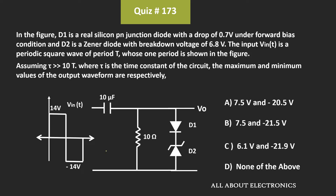In this question, we have been given this circuit, and in this circuit, this square wave is applied as an input. We have been given that the voltage drop across this P-N junction diode is 0.7V and the Zener breakdown voltage of the Zener diode is equal to 6.8V. We have been asked to find the maximum and the minimum value of the output waveform.